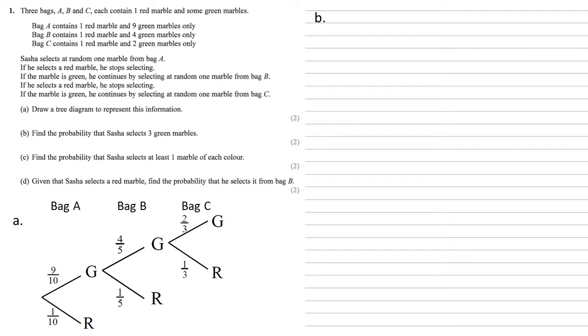For part B, we need to find the probability that Sasha selects three green marbles. Well, there's only one route through our tree where three green marbles are selected. That's green, green, green. So to find the probability, we multiply those three probabilities together. Nine tenths times four fifths times two thirds, giving us an answer of 12 over 25.